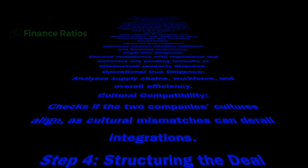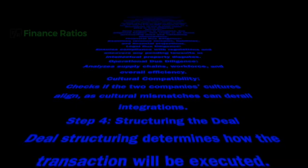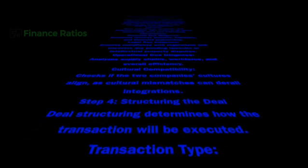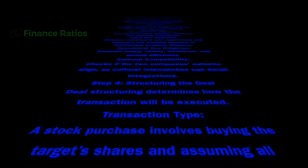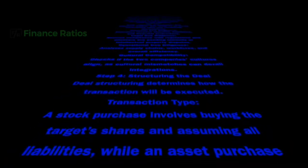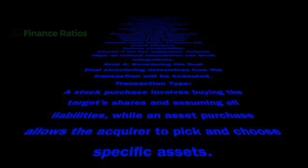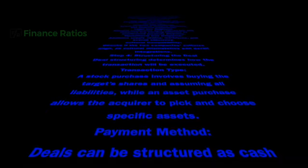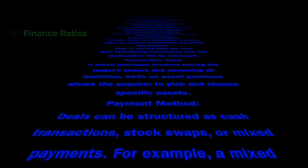Step 4: Structuring the Deal. Deal structuring determines how the transaction will be executed. Transaction Type: A stock purchase involves buying the target's shares and assuming all liabilities, while an asset purchase allows the acquirer to pick and choose specific assets. Payment Method: Deals can be structured as cash transactions, stock swaps, or mixed payments — for example, a mixed payment might involve 50% cash and 50% equity.